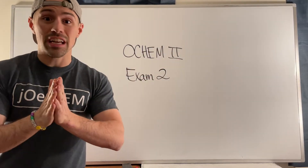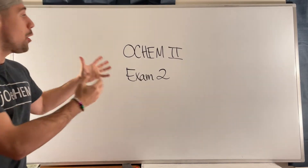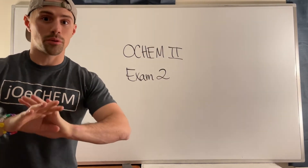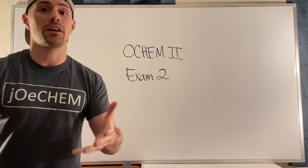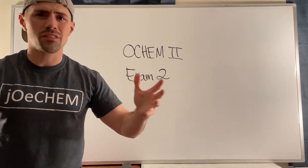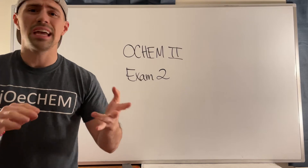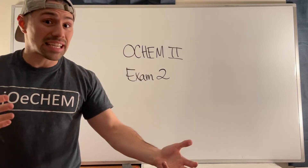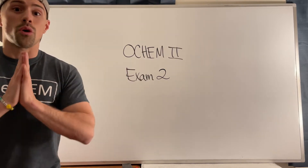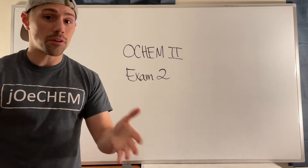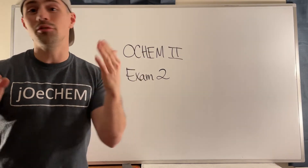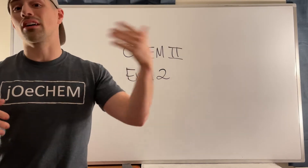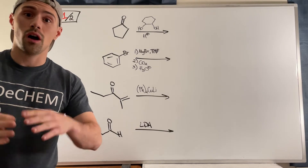Hey gang, welcome back to another exam solutions walkthrough for OCHEM 2, exam 2. If you are here, that means you are probably getting ready for a test, so good luck, you got this. You're here because you've tried the practice exam covering carbonyls, ketones, alpha carbon stuff, enolates, enols, aldol reactions, and carboxylic acid material. We're going to go through the worksheet and see how I arrived at the answers.